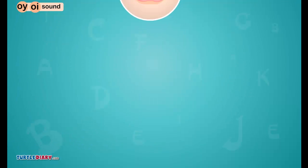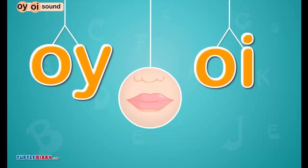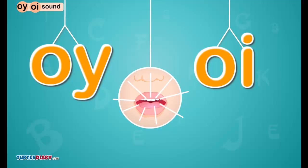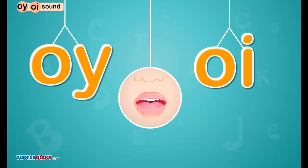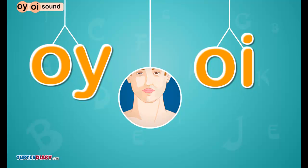How to make the sound. First, make your lips round and then spread them out to make the oi sound. Try again. This time, put your hand on your throat. It moved or vibrated.